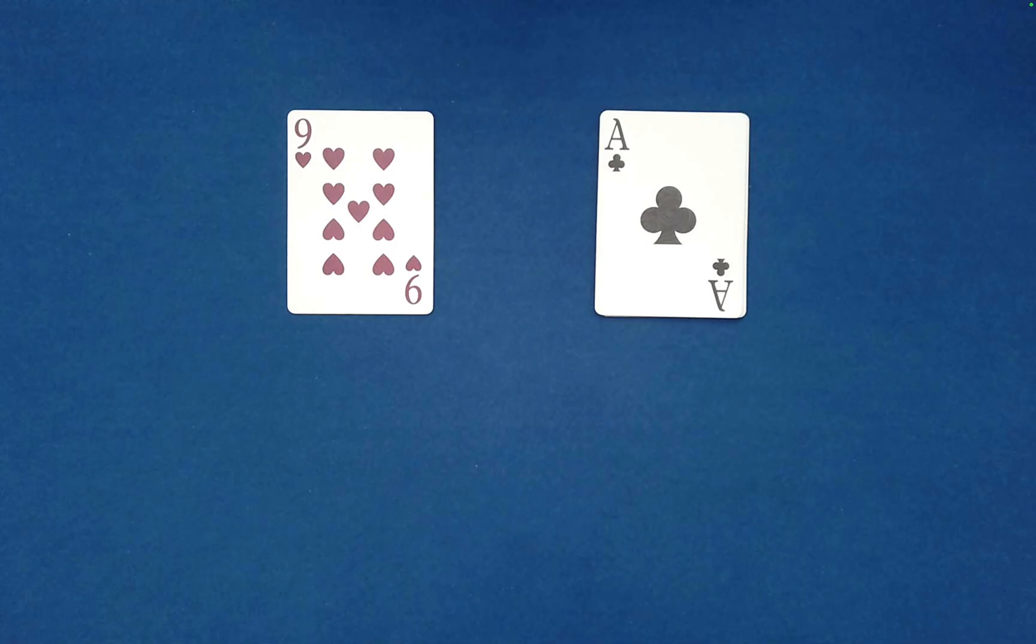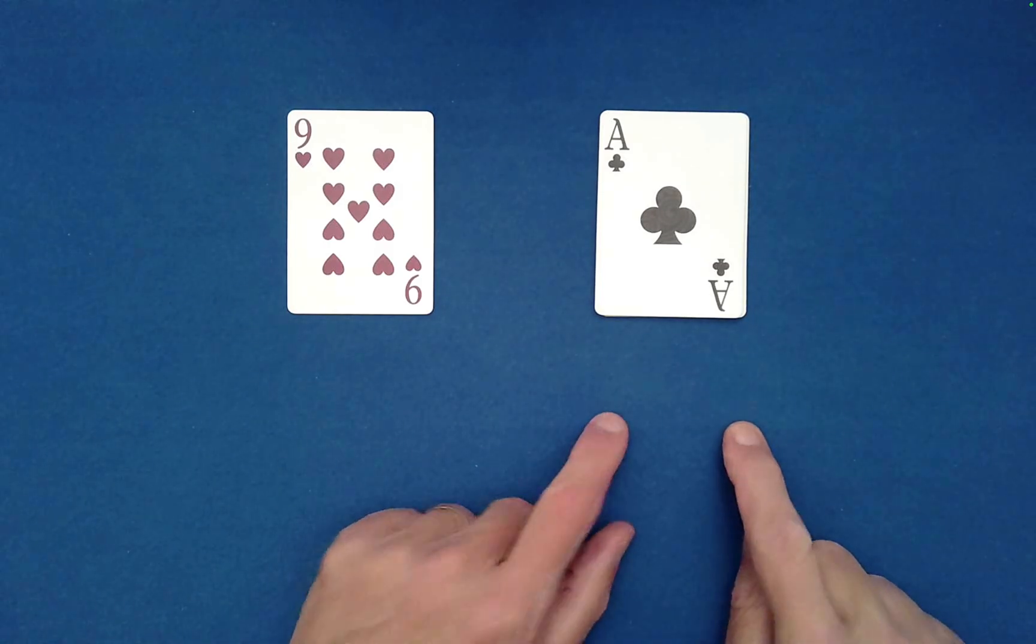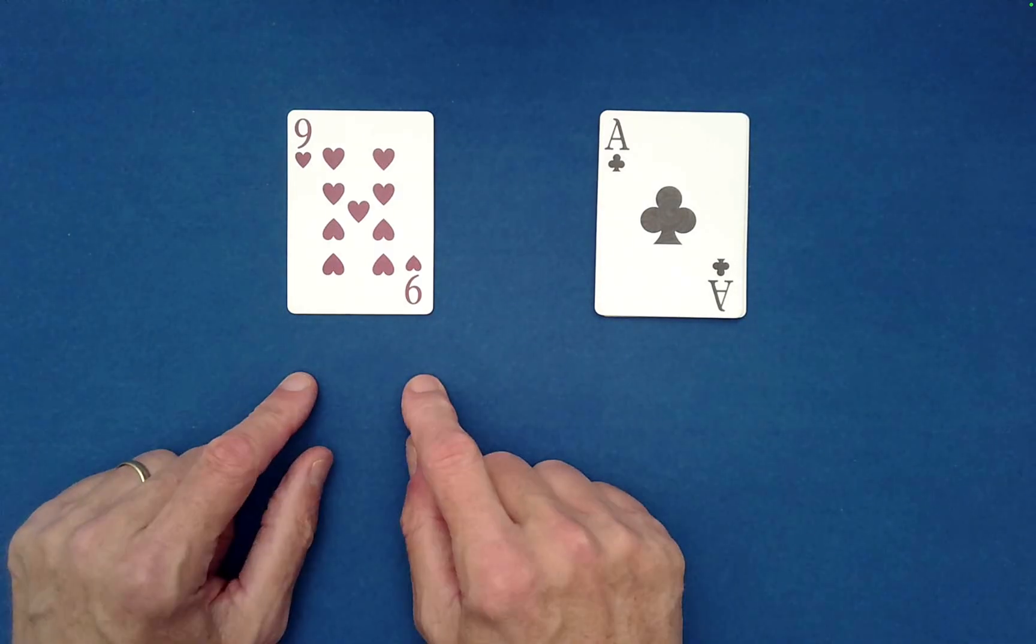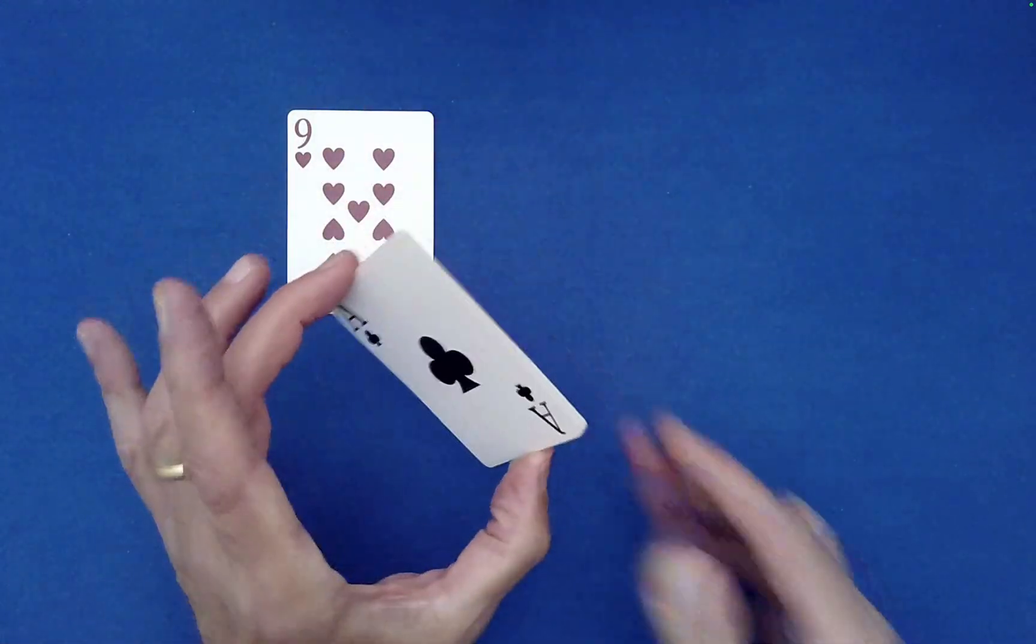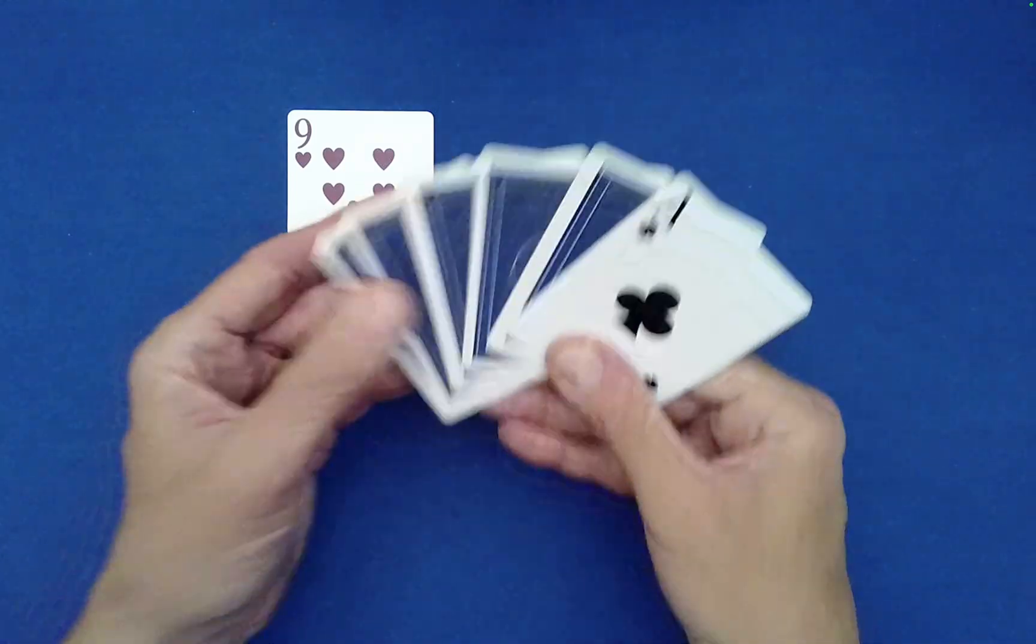But this will work every time. It's a very slick quick routine that gets a wonderful reaction because the spectator can actually see that ace moving positions during this mixing and they can stop at any point in the mixing. But nonetheless, the ace of clubs is able to find the nine of hearts. Isn't that amazing?